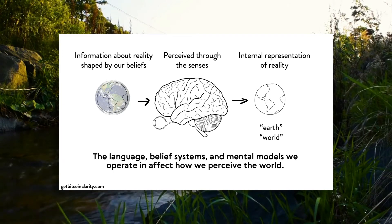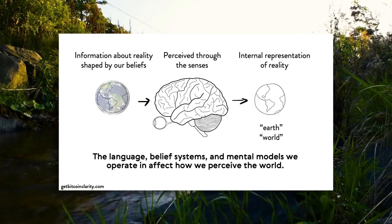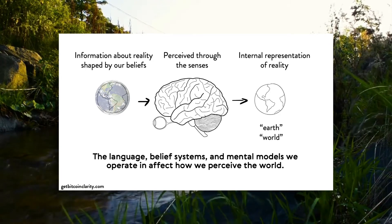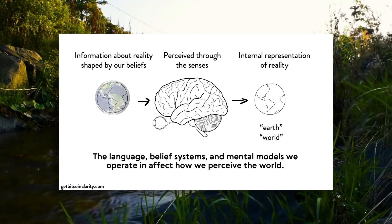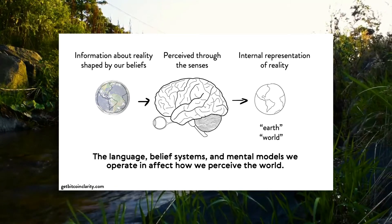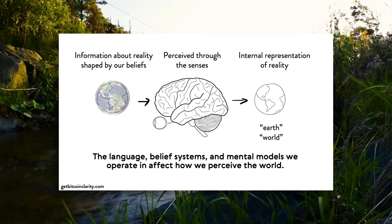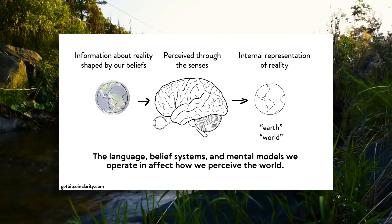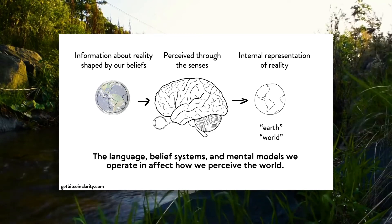Very few of us have ever gone high enough in the atmosphere to see the actual curvature of the earth, but we all understand and perceive the world as being round. When I look at the horizon, I'm pretty sure I can see a curve — but is that because I see it, or because I believe it? I probably shouldn't have used flat earth as an example, but you get the idea.